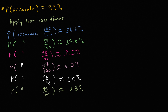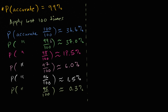So this was a thought experiment. If we had a test where every time you administer it the probability that it's accurate is 99%, then these are the probabilities of getting 100, 99, 98, 97, 96, or 95 out of 100 accurate when you administer it 100 times. Let's keep that in mind and think a little bit about hypothesis testing and how we can use this framework.